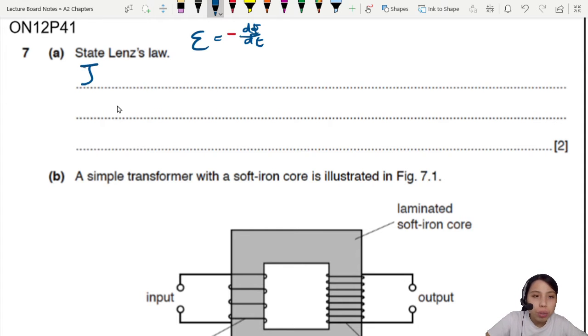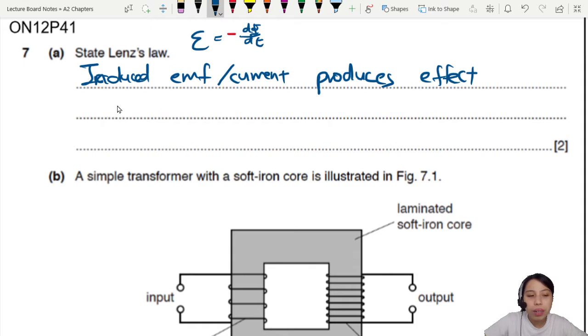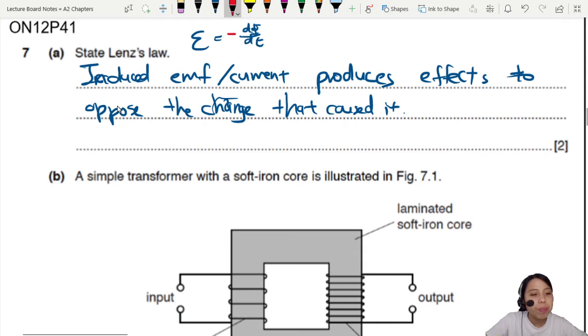So you can say that the induced EMF, or if you have a complete loop, then you have induced EMF or current, produces some kind of effect or some kind of field, or magnetic field. So produces effects or field to oppose the change that caused the induced EMF. So the change that caused it. That's what you can say. Cause it.